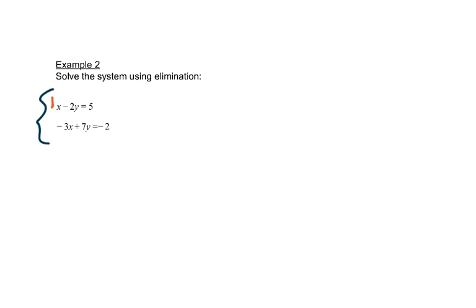Well, if we look at the 1 and the 3, we could get opposites if we multiplied this top equation by 3. Okay, so let's do that. We're going to multiply the whole top equation by 3. That would give us 3x minus 6y equals 15. Everything in the equation is getting multiplied.